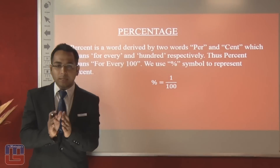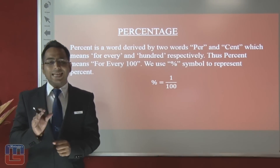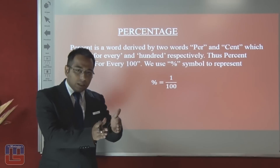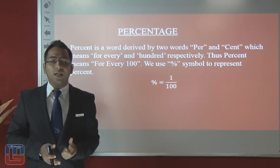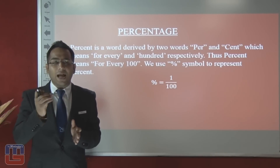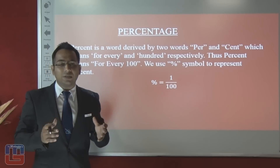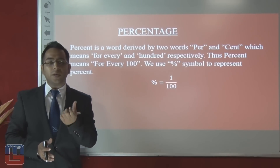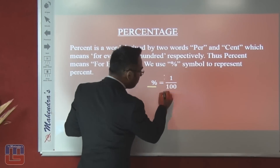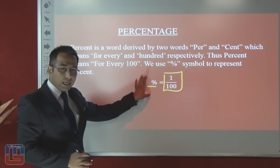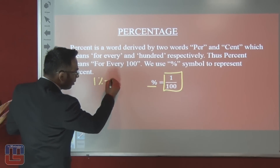The word 'percent' is divided into two words: 'per' and 'cent.' Per means for every, and cent means 100. So the basic meaning is for every 100. If we have any value, we can divide it into 100 equal parts to get 1% of that value. The symbol of percent means 1 by 100, so wherever we see a percent sign, that value can be divided by 100.